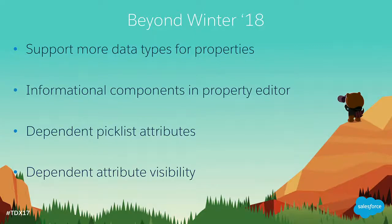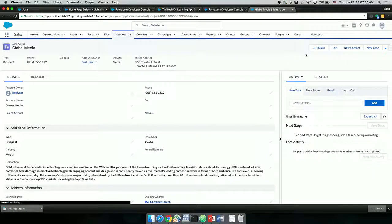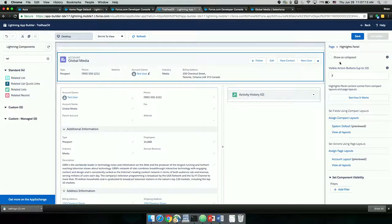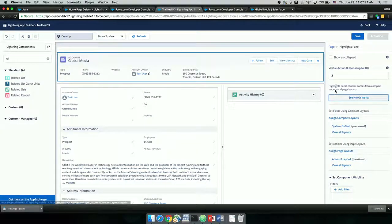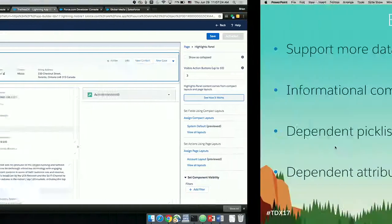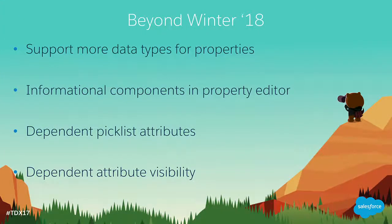Let's talk about some upcoming features beyond the Winter 18 release. We really want to make the property editing experience better for admins, which means exposing more features for developers. Areas we're looking at include supporting more data types, exposing informational components — for example, a 'see how it works' button in the property editor that pops up a modal with more description of how to use the component, which we haven't yet exposed for custom components. We're also looking at dependent picklist attributes and dependent attribute visibility as upcoming features for properties.